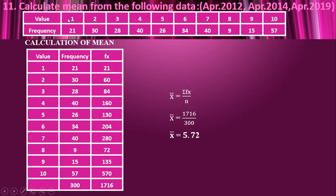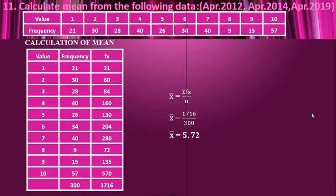Here you have the values and the frequency, so this is a discrete series. The value is taken as x and frequency as f. fx is found, and the total of fx is σfx. The total of frequency is n. Going to the formula: x̄ = σfx / n. σfx is 1716, n is 300. So x̄ is 5.72.